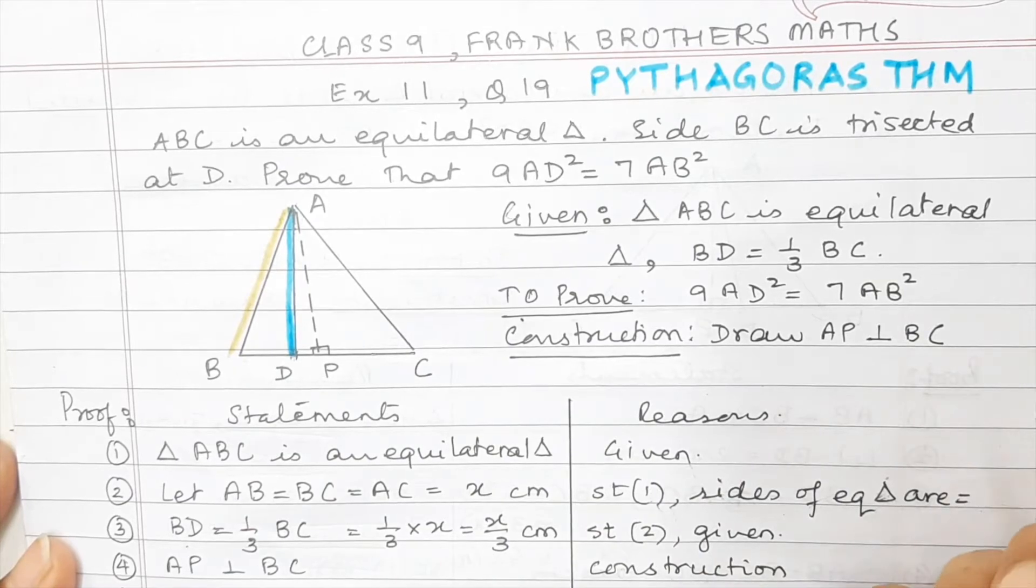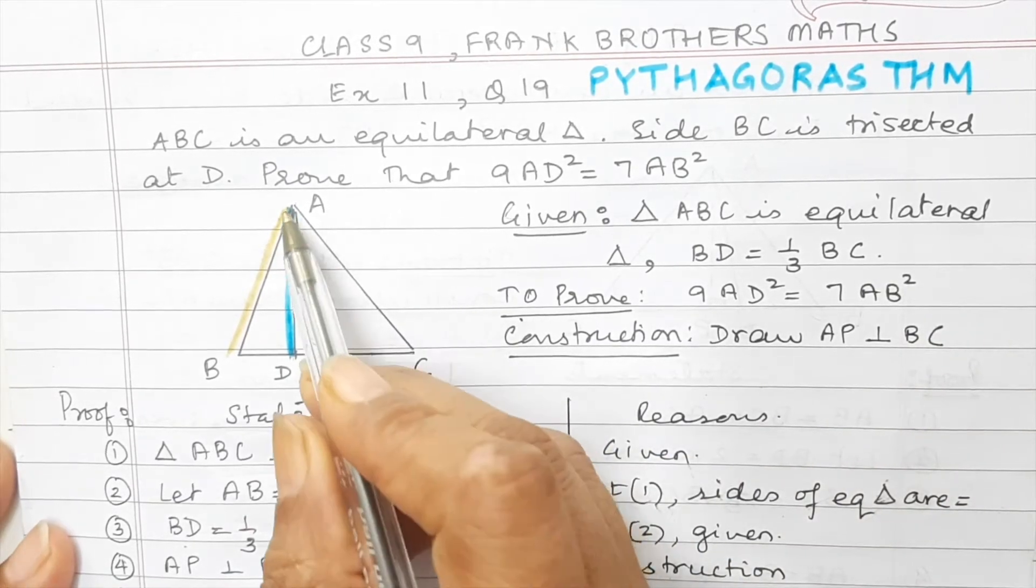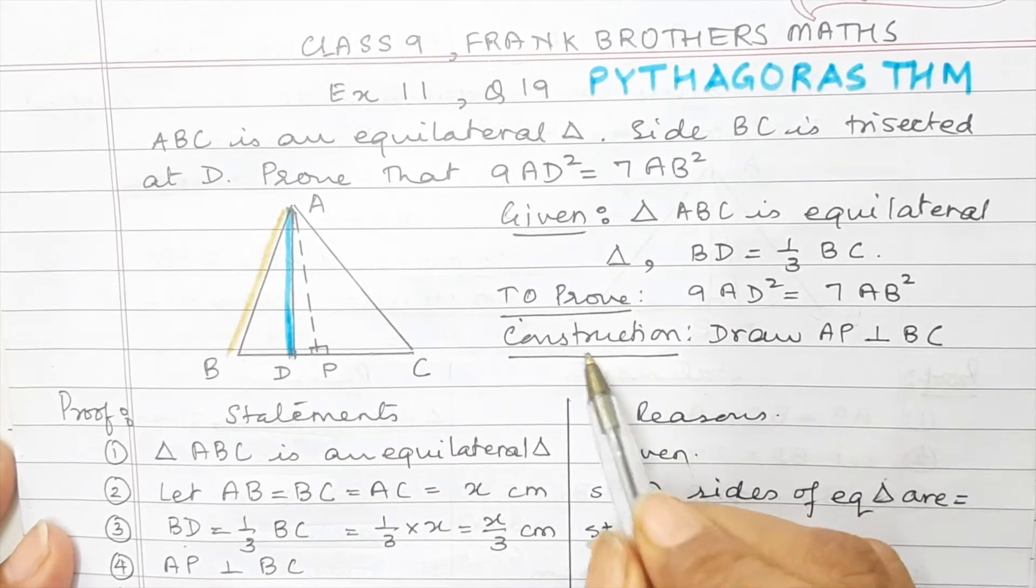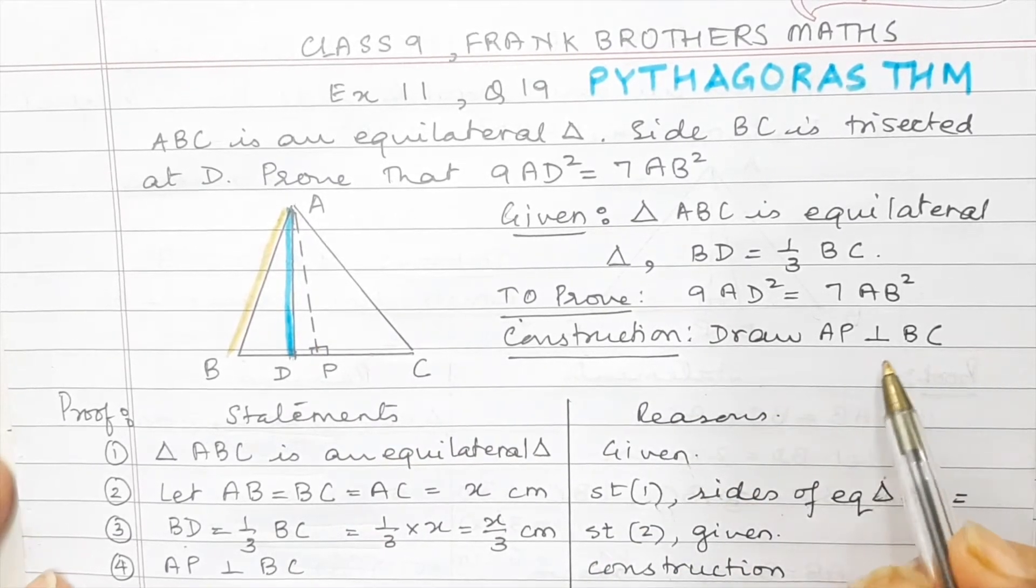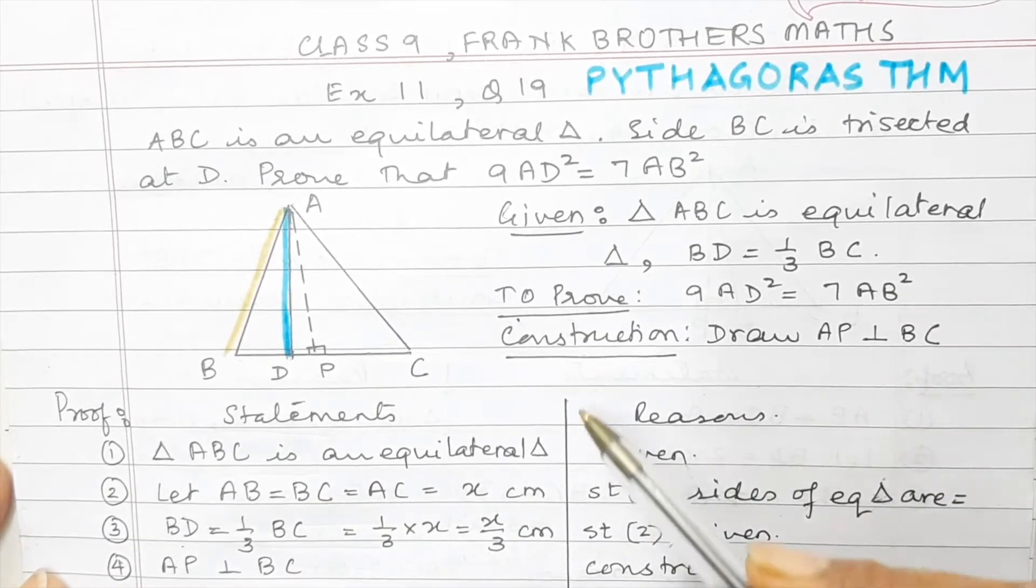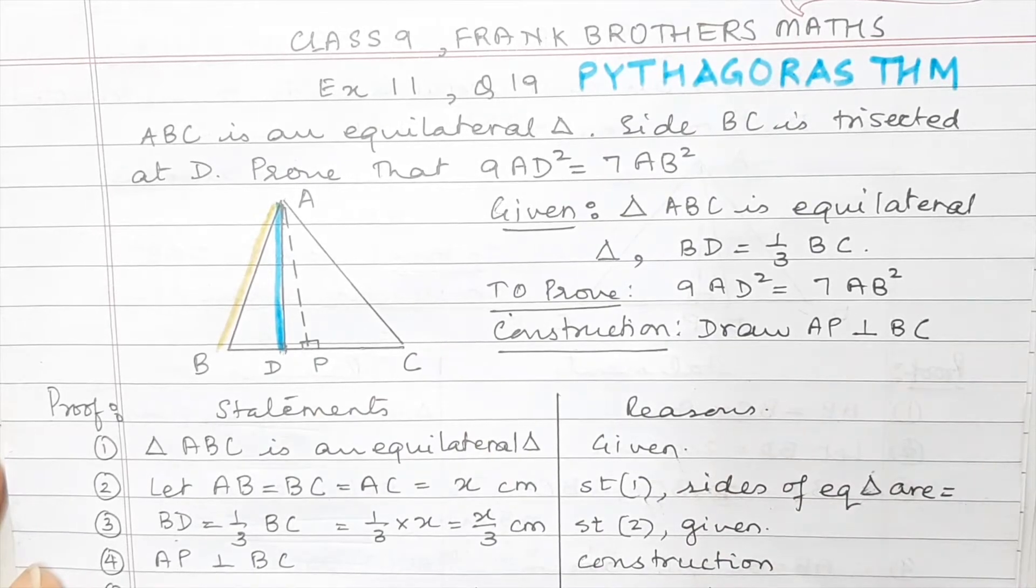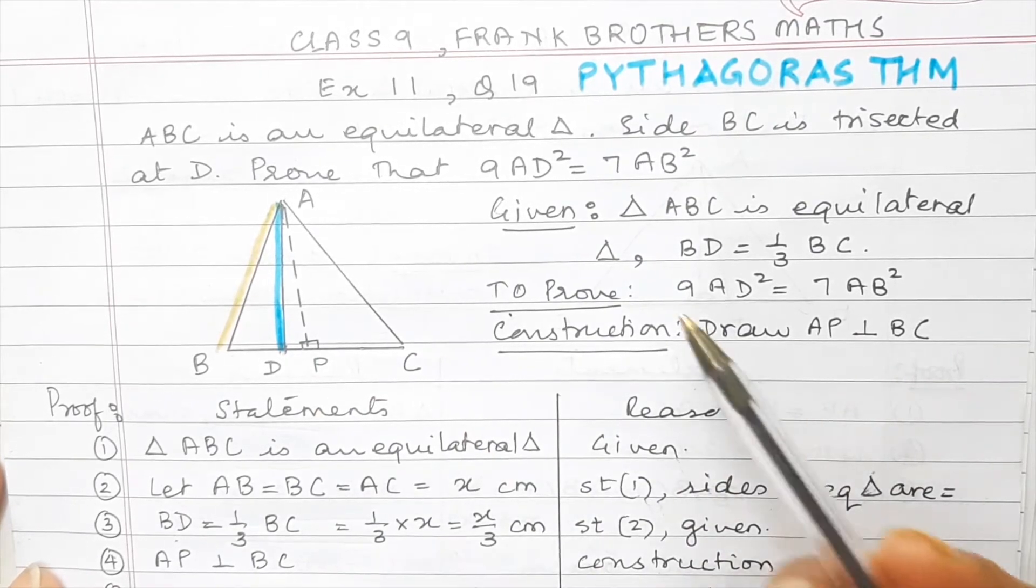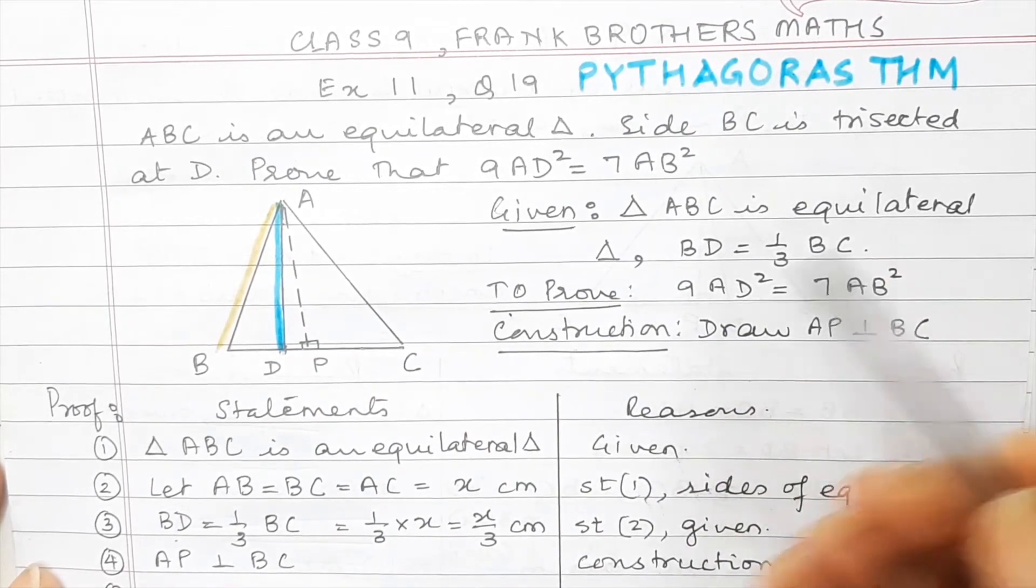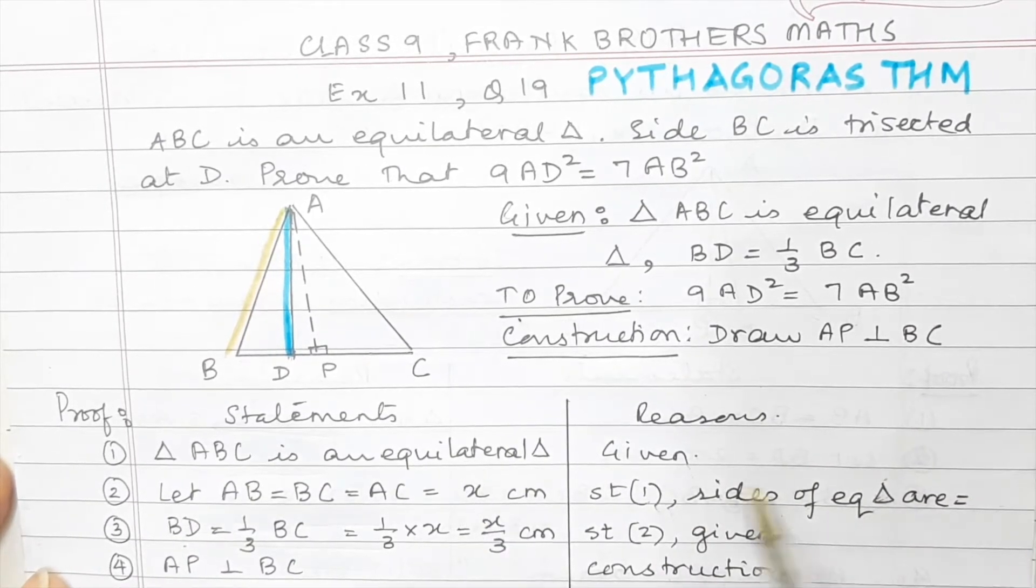Now because there is no right triangle given to us, we will have to drop a perpendicular. So from A drop a perpendicular, that becomes our construction. So AP perpendicular to BC. When we write the proof, we divide the page into two halves, statements and reasons. All right. So in case you are stuck for anything, you start with just triangle ABC is an equilateral triangle, which is given.